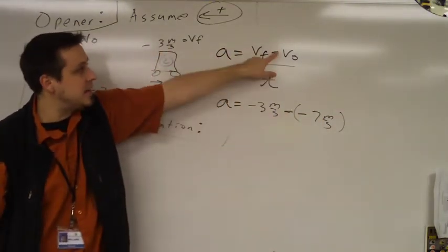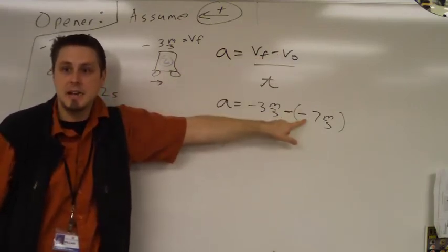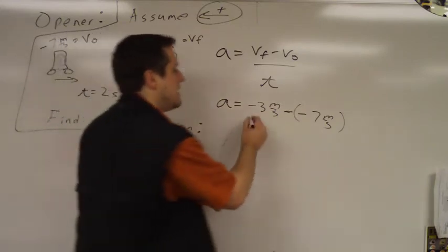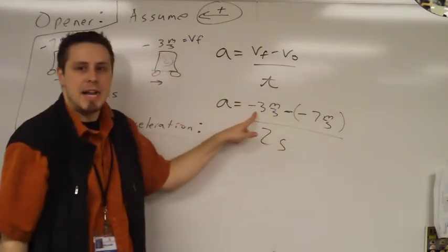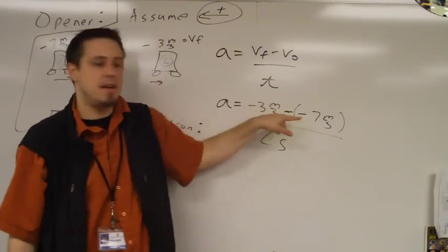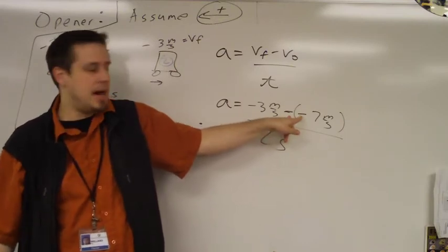So notice, is this negative still here and always here? Yes. Sometimes this is a positive, sometimes it's a negative. So now divided by time, which is 2 seconds, and what is a minus 3 minus a minus 7? When you have two minuses, it becomes a positive, because negative times a negative is a positive.